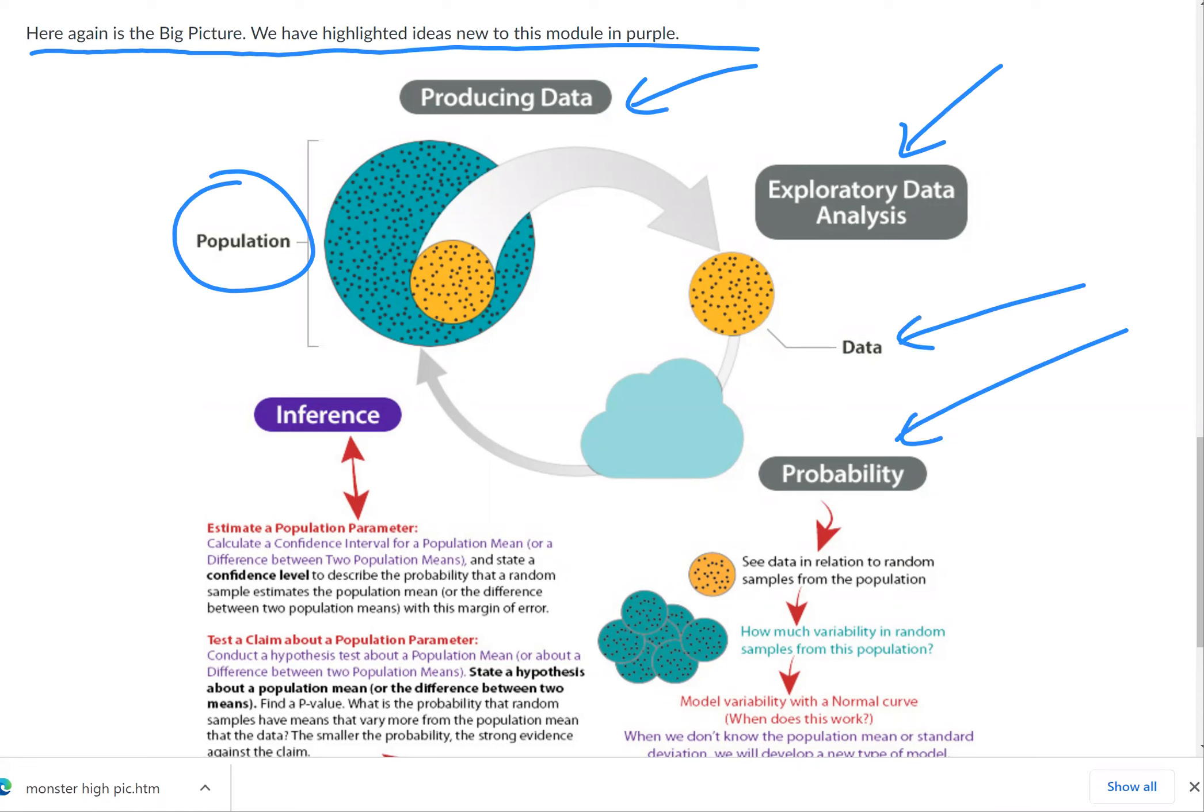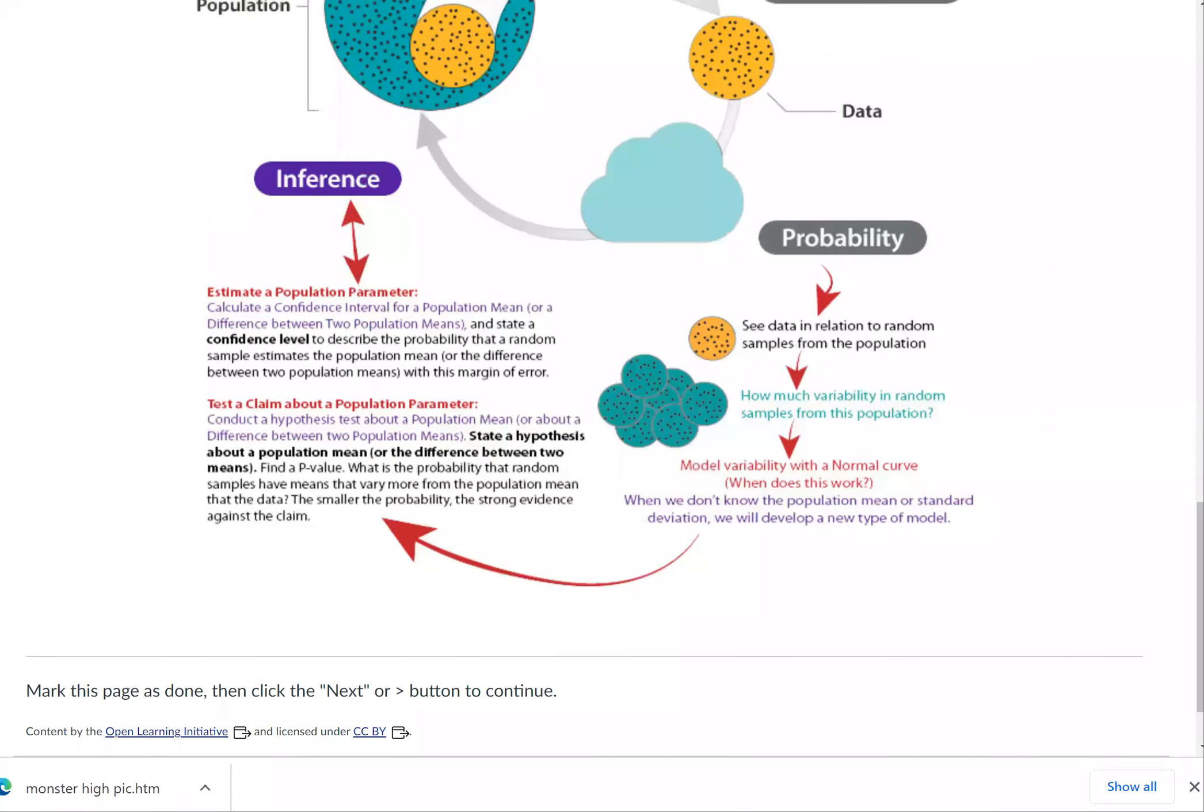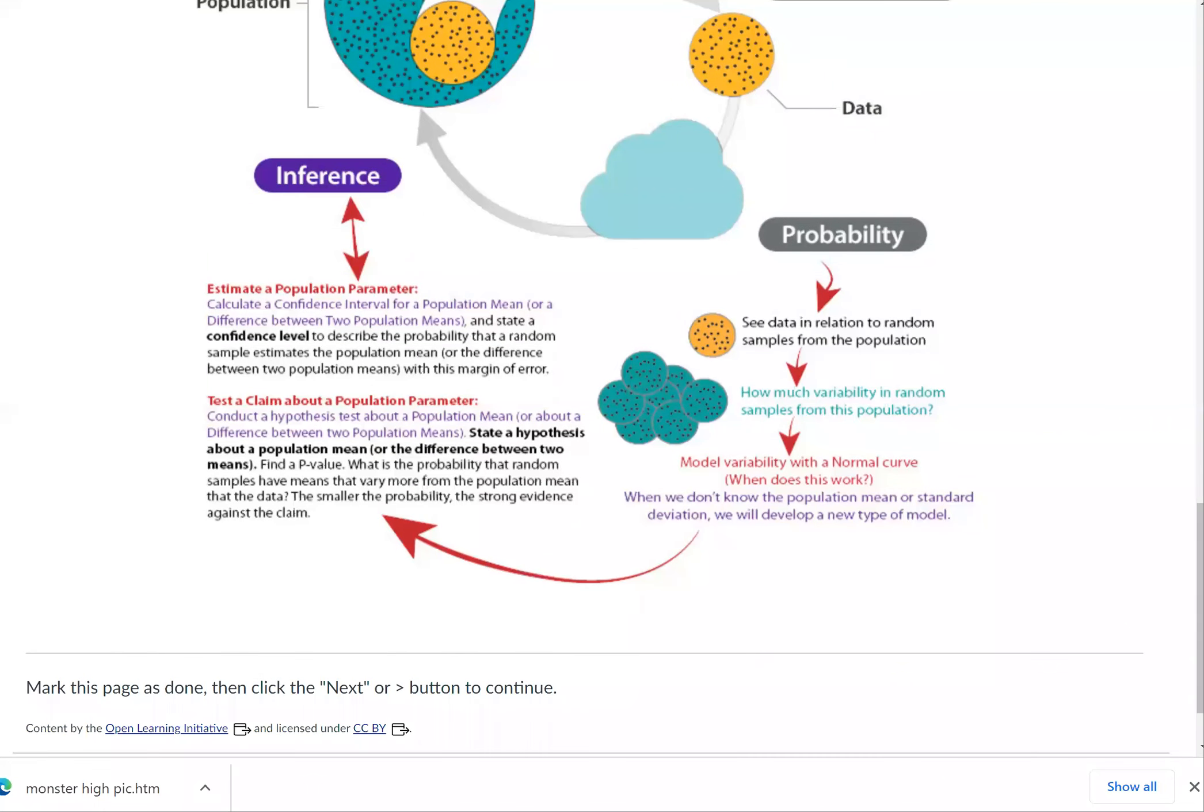Here's the data. We look at probability, and then we see data in relation to random samples. How much variability in random samples from this population, etc. That's all the same old same old. But the new thing, let's see, is the pattern. What's in purple? So all this very small writing, but the main idea is inference.